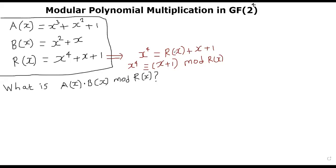Welcome back. In this segment, I will present an algorithm to compute modular multiplication in the context of Galois field — for example, GF(2⁴). That means there are 16 polynomials. We want to multiply two polynomials like we did in the previous segment, but we would like to apply mod r(x) afterwards.